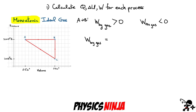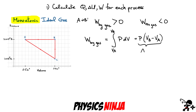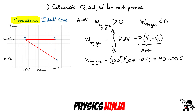If you write that down, it's the integral of P dV from V_A to V_B. Since pressure is constant, you take it out of the integral and get P times (V_B − V_A). Substituting our values: pressure is 3×10⁵, and the change in volume is 0.8 − 0.5 = 0.3 m³. The work done by the gas is 90,000 joules. The work done on the gas would be −90,000 joules.